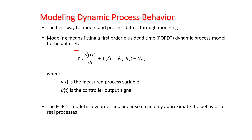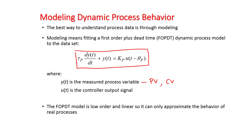For an introduction, we're going to use a very simple model: a first order plus dead time dynamic process model. The y variable — also called the PV, or controlled variable (CV) in model predictive control — is the output. The U is the input, also called the controller output, or in model predictive control, the manipulated variable. The first order plus dead time model is a low-order, linear representation, so it won't work well for very nonlinear systems, but it can approximate behavior in a particular operating region.